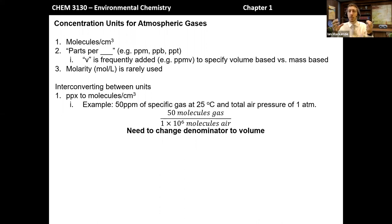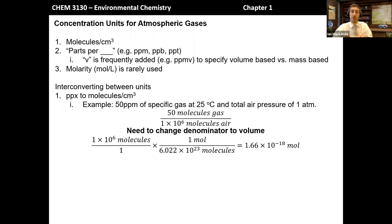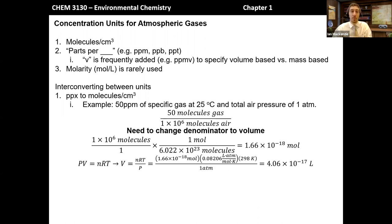So how do I relate number of molecules to volume? It's the ideal gas law. I need to relate number of molecules to number of moles, and then number of moles is related to volume via the ideal gas law. First, I take Avogadro's number and convert from molecules to moles — so 1 million molecules is really 1.66 times 10 to the minus 18 moles. Then I use the ideal gas law, rearrange for volume, substitute in the number of moles, the gas constant, and the temperature.